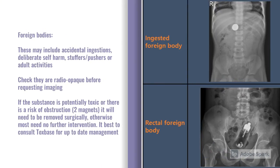Foreign bodies is the final thing we'll talk about. These can be accidental ingestions, often seen in children and dementia patients. We also see it as a form of deliberate self-harm, stuffers and pushers concealing drugs, and other adult activities. Just before you request an abdominal x-ray, make sure the foreign body you're looking for is actually radio-opaque, otherwise it's not going to show up on imaging. In terms of management, more often than not we don't do anything — as long as it's below the diaphragm and in the GI tract, most foreign bodies will sort themselves out. But if the substance is potentially toxic, or in children who ingest several small magnets that can clamp together and cause obstruction, those will need to be removed surgically. Make sure you're checking Toxbase and using the most up-to-date guidelines.